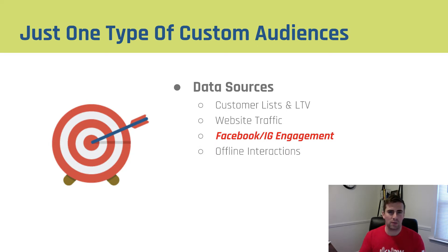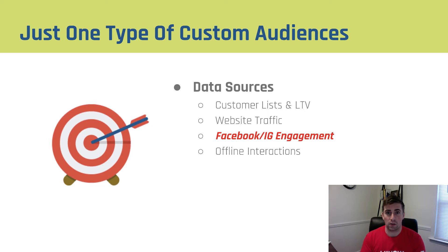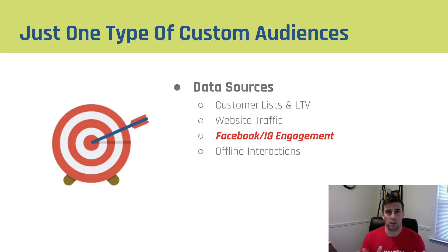These types of custom audiences are just one of four types. We also have the ability to use our customer lists combined with lifetime value to upload to Facebook and tell them these are our existing customers, go find more. We can segment our website traffic for better retargeting and lookalike audiences. We can use our offline event interaction data to upload as well. There's a card in the upper right-hand corner linking you to the other three videos — make sure you check them all out. It's important to have these set up before you start advertising.